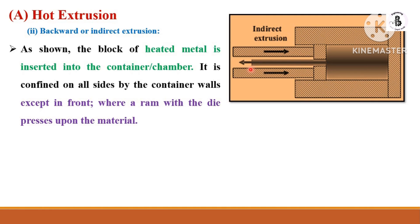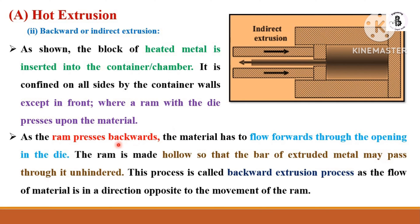In the indirect extrusion process, the heated block of material is inserted into the container or chamber and confined on all sides by the container walls except at the front opening. The ram, with the die attached, presses upon the material. As the ram presses backward, the material flows forward through the die opening. The ram is made hollow so that the extruded metal bar may pass through it unhindered. This is called the backward extrusion process because material flows opposite to the ram's movement.